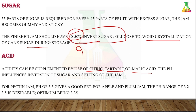Pectin is also added to jams while boiling. It helps maintain the pH and is added in a small quantity, similar to the acid — not in bulk.